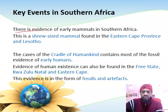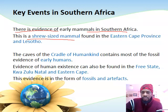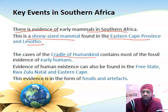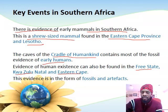There is also evidence of early mammal existence in southern Africa — a shrew-sized mammal, a small animal resembling a mouse with a pointed mouth, mostly insectivorous, found in the Eastern Cape province and Lesotho. Additionally, the caves of the Cradle of Humankind contain fossil evidence of early humans, including bones, artifacts, jewelry, and tools. Evidence of early humans can also be found in the Free State, KwaZulu-Natal, and Eastern Cape.